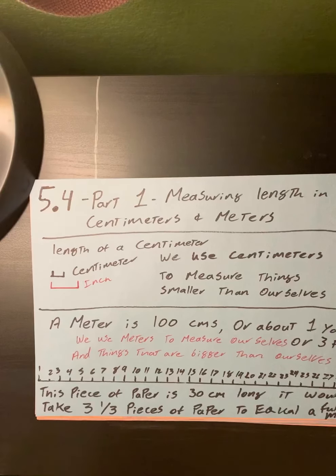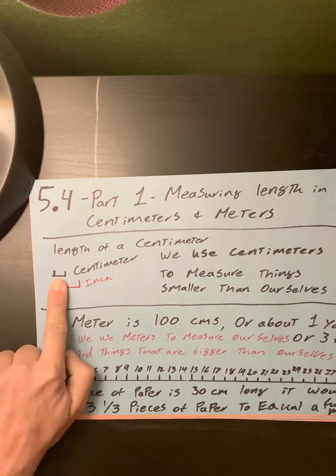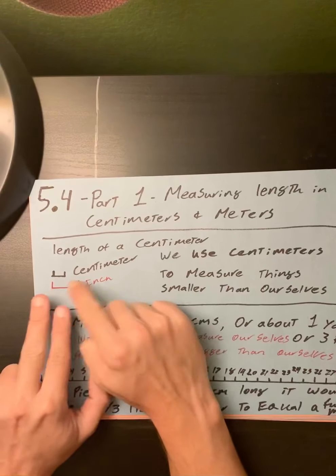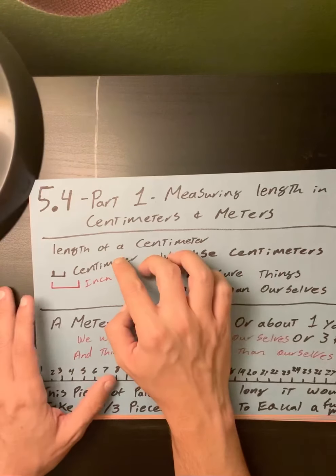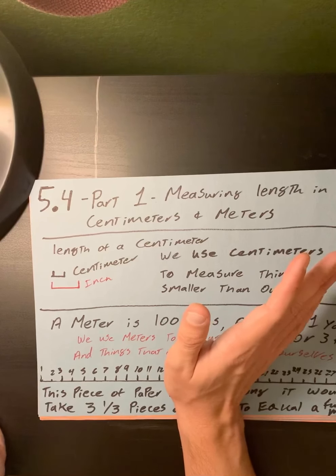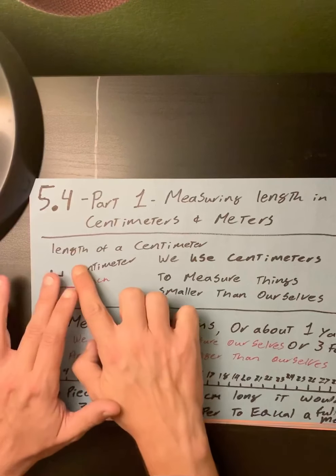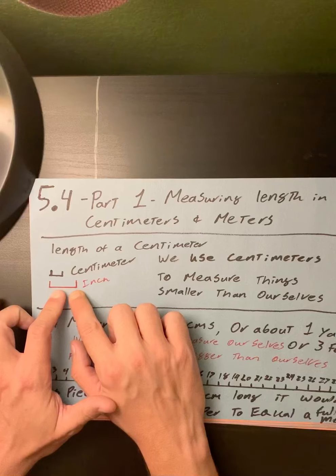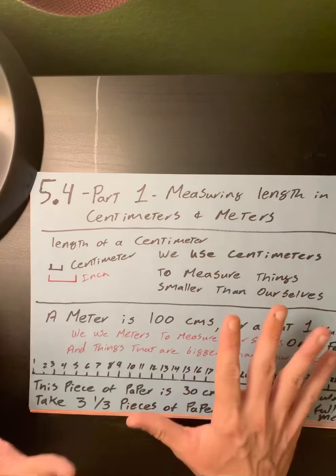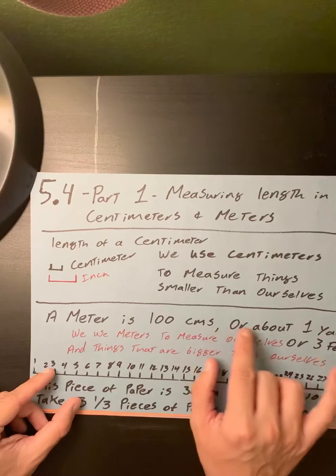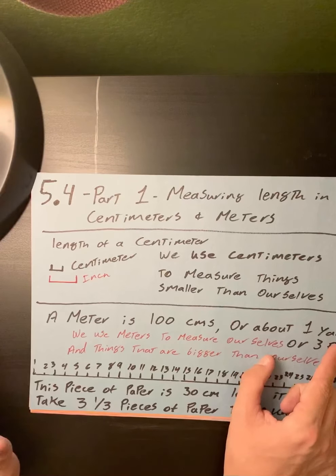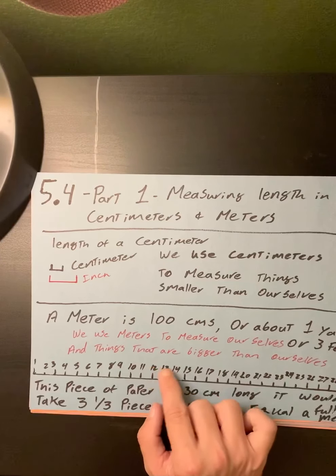Into the lesson, 5.4 Part 1, we are going to be measuring length in centimeters and meters. The length of a centimeter: this is a centimeter, it is about the length of one finger across, compared to an inch, which I said was about two fingers across. A centimeter is about half the length of an inch, sometimes a third, but we're just saying it's less than an inch. We use centimeters to measure things that are smaller than ourselves.